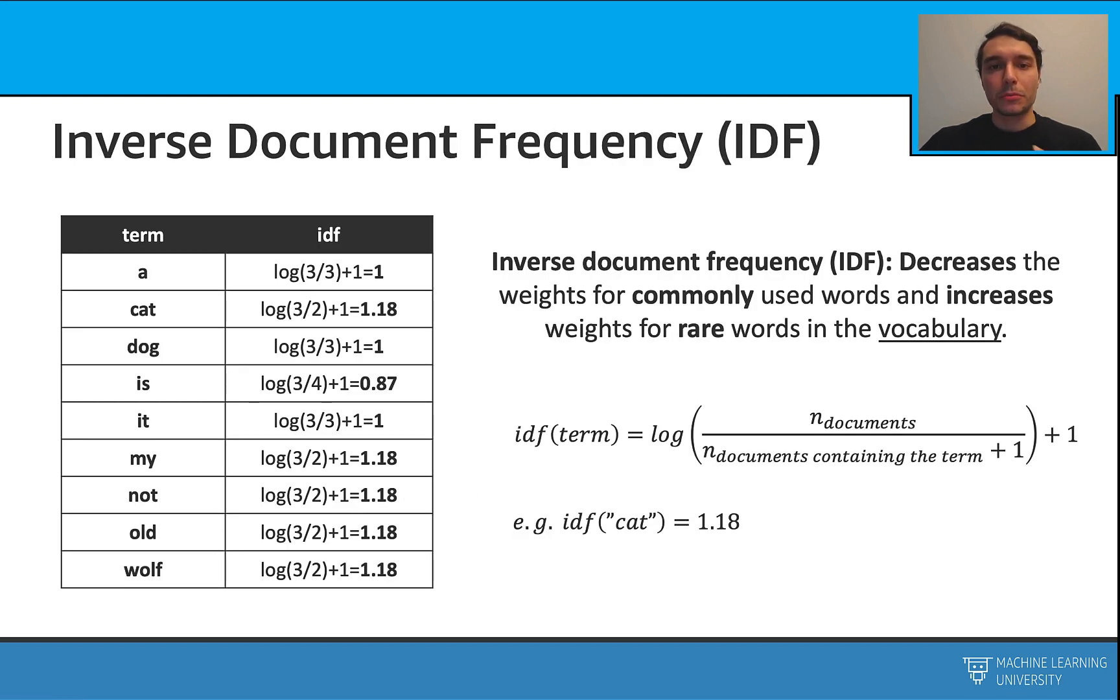Inverse document frequency is calculated for each word in our vocabulary. It decreases the weight for commonly used words in our vocabulary and increases the weight for some rare words in the vocabulary. We calculate the IDF for each term, and it can be calculated with this equation.